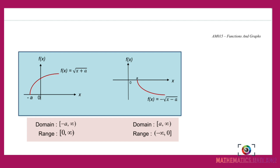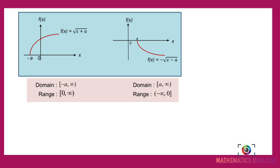For the third graph, f(x) equals √(x plus a), where x plus a must be greater than or equal to 0, so x is greater than or equal to negative a. The graph starts at negative a and goes to the right and upward. The domain is from negative a to infinity and the range is from 0 to infinity.